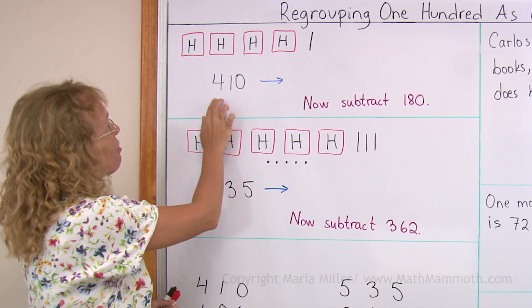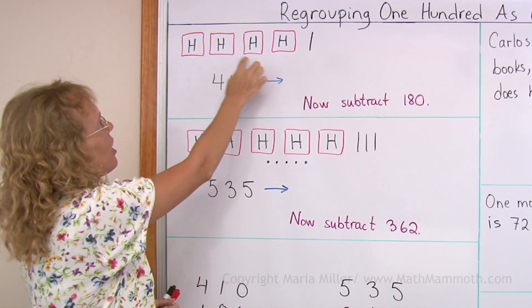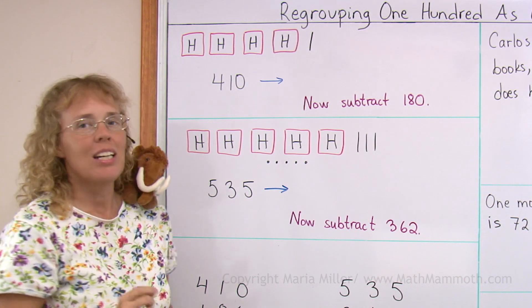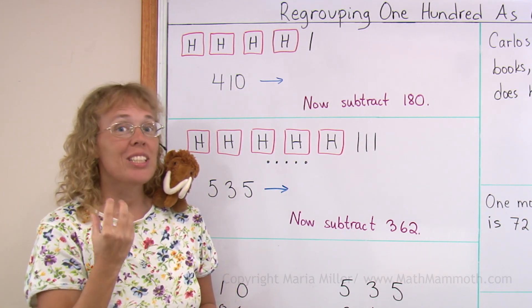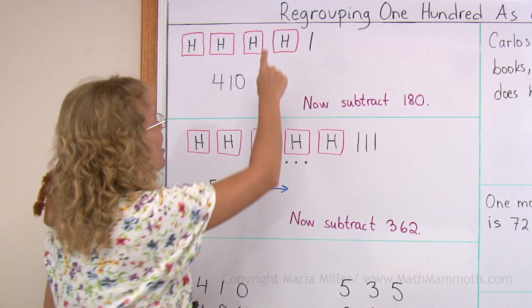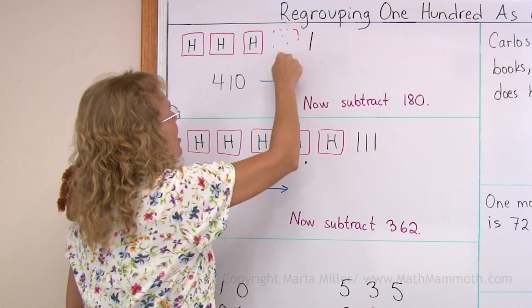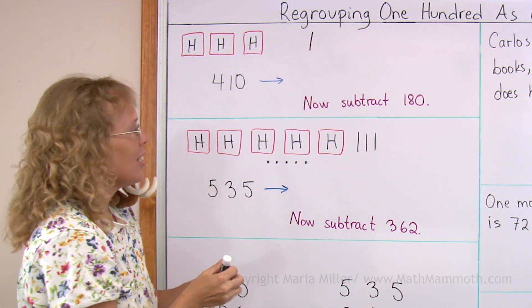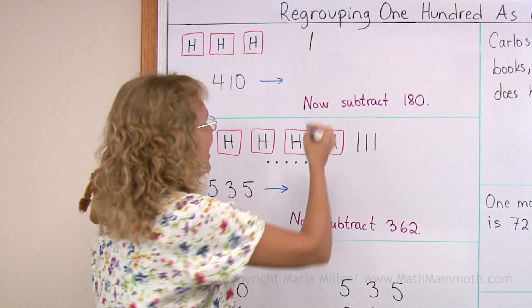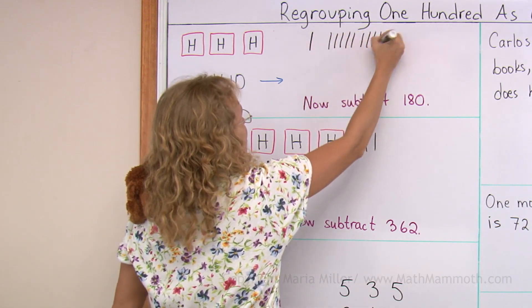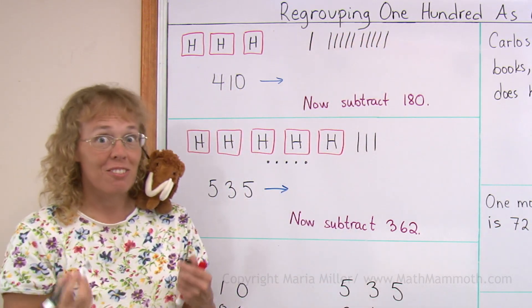And we have four hundred ten here. Four hundreds and then a ten. I'm going to take one of those hundreds and break it into ten tens. Like this. This is the hundred. And in its place I'm going to now draw ten tens. Alright. So this is the regrouping.